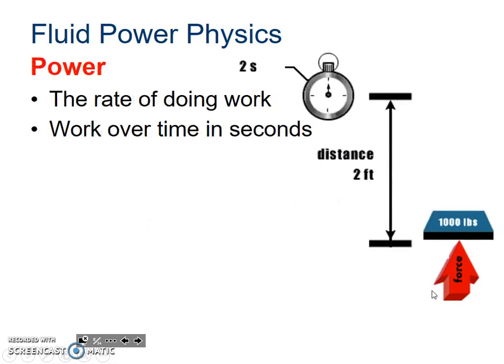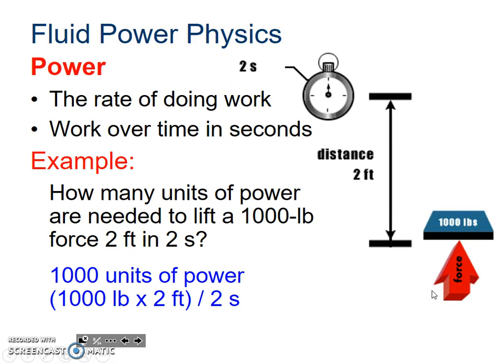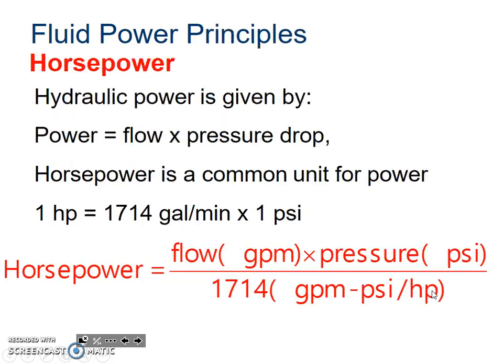Power, on the other hand, is the rate of doing work. This is how fast you're going to do it. This is work over time. So you do that same 2,000 foot pounds of work over two seconds in this case, and you get 1,000 power units worth of work, or worth of power. Horsepower is what we measure motors in.